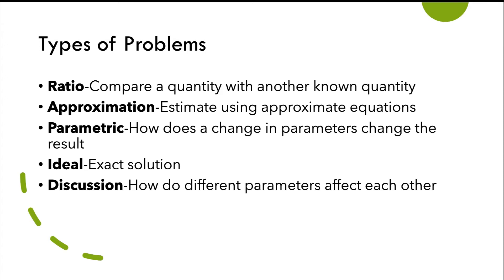The third type of problem is a parametric problem. If I change a parameter over a range of values, how does that change the result? I might have an ideal problem where I'm looking for an exact solution. This is the case in many types of engineering analysis classes. And then there's also discussion problems, which is discussing how adjusting one parameter might affect other parameters in the system.